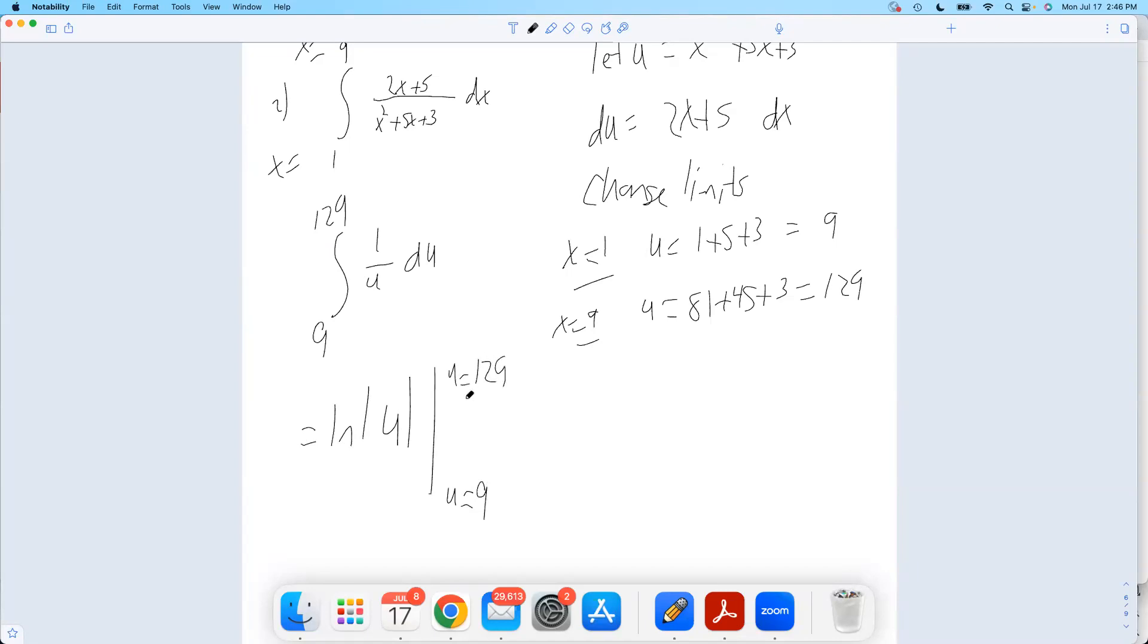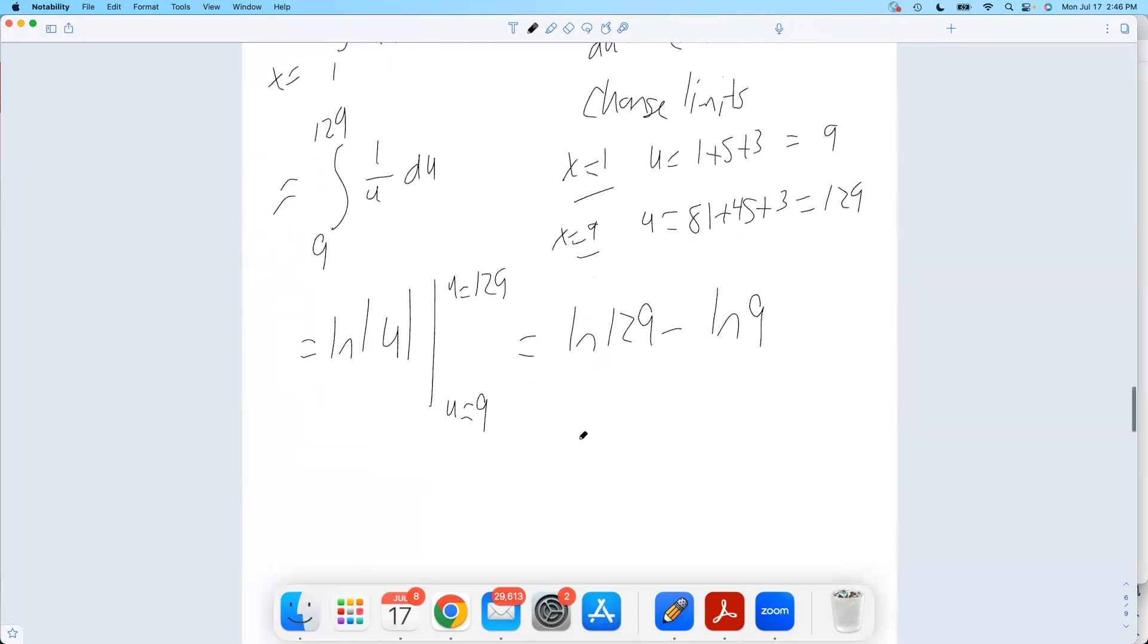That will be the natural log of the absolute value of u, evaluated from these two different numbers. And we changed our limits of integration, so I don't have to go back in and plug in x values, we're done with x. Once we got here, we were done with x.